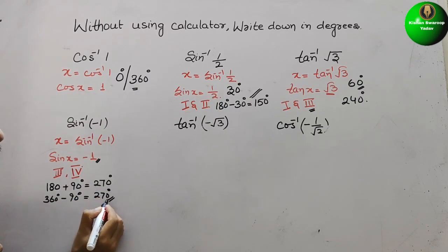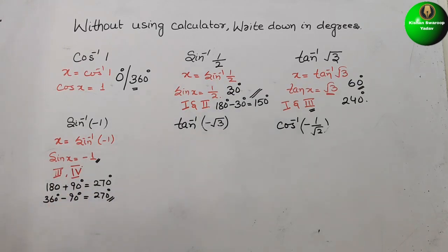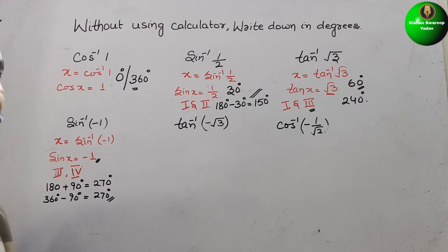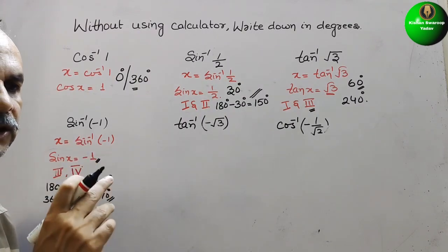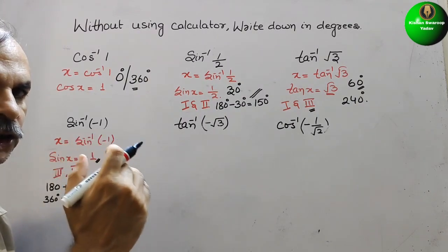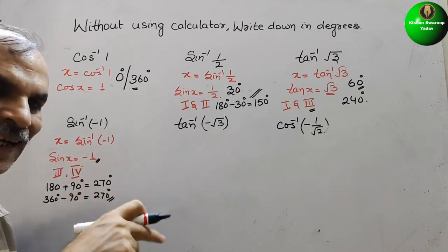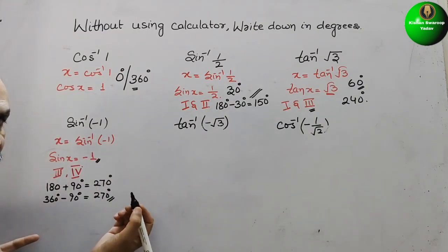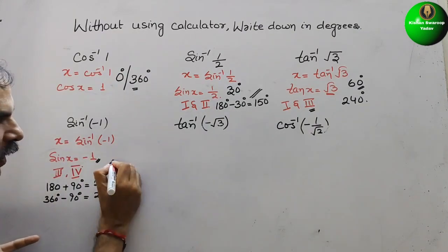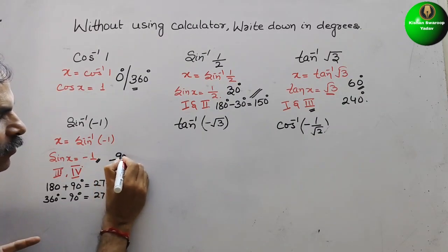So the angle is 270 degrees, or we can write it as minus 90 degrees. That is, 360 minus 90, so you can write 270 degrees or minus 90 degrees.